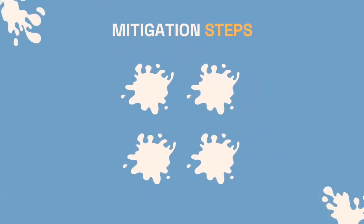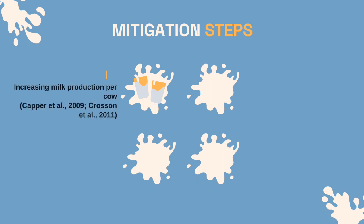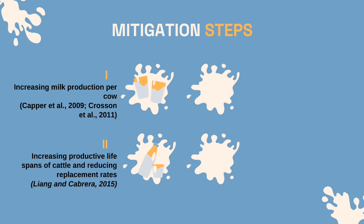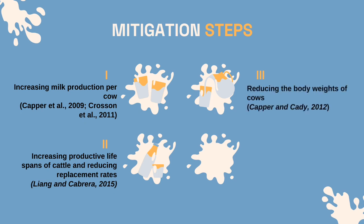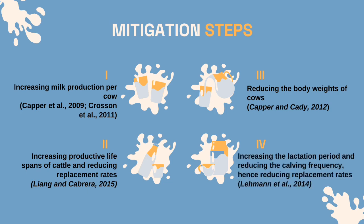There are four suggested mitigation steps. First, increasing milk production per cow (Capper et al., 2009; Crossan et al., 2011). Second, increasing productive life spans of cattle and reducing replacement rates (Liang and Cabrera, 2015). Third, reducing the body weights of cows (Capper and Caddy, 2012). Fourth, increasing the lactation period and reducing the calving frequency, hence reducing replacement rates (Lehman et al., 2014). All mitigation steps point towards reduced maintenance and pregnancy requirements per kg of milk, due to keeping fewer cows for the same amount of milk, fewer young stock to replace cows, fewer calves, or less body weight per productive cow.